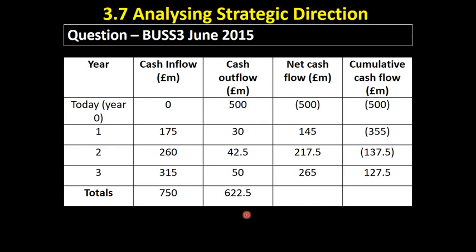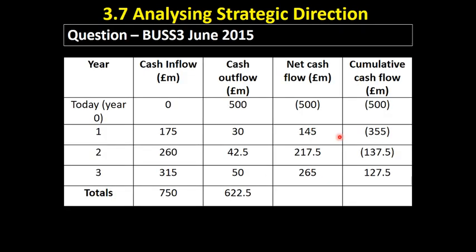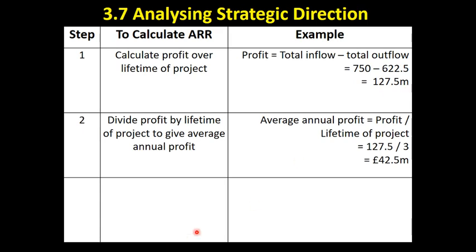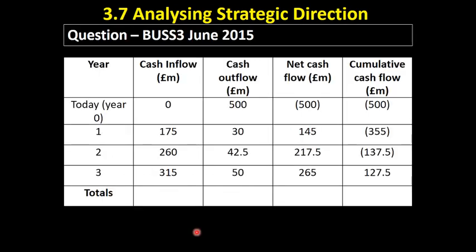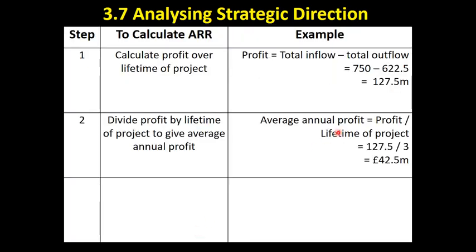But exactly how much profit is this going to earn us over the three years? We simply calculate the total inflows minus the total outflows. The project earned 750 million; the total cost was 622 million, giving us a lifetime profit of 127.5 million. So now we need to work out the average annual profit, because our formula is the average annual return divided by the initial outlay. If it makes 127.5 million over three years, that equals an average annual profit of 42.5 million from this investment.